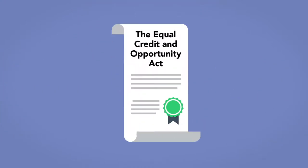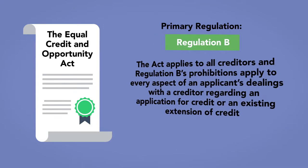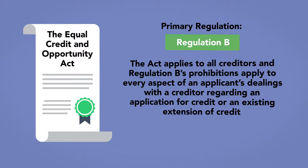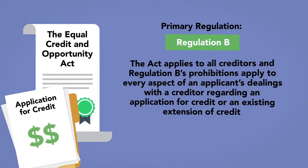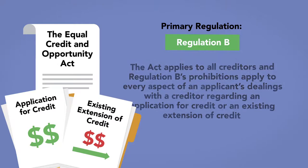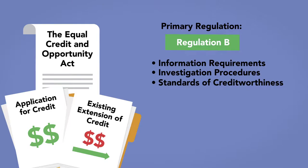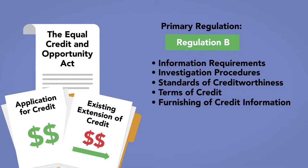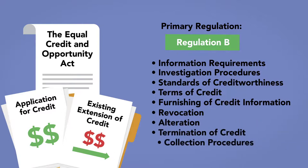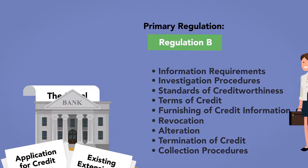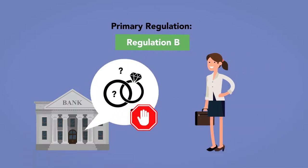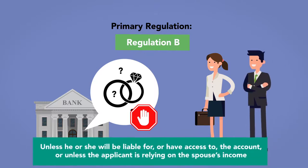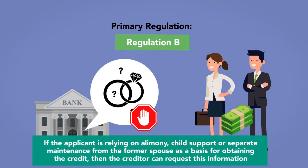The Equal Credit Opportunity Act's primary regulation is known as Regulation B. The Act applies to all creditors, and Regulation B's prohibitions apply to every aspect of an applicant's dealing with a creditor regarding an application for credit or an existing extension of credit. This includes information requirements, investigation procedures, standards of creditworthiness, terms of credit, furnishing of credit information, revocation, alteration, or termination of credit, and collection procedures. Regulation B prohibits a creditor from requesting information about the applicant's spouse or former spouse, unless the spouse will be liable for or have access to the account, or unless the applicant is relying on the spouse's income. For example, if the applicant is relying on alimony, child support, or separate maintenance from the former spouse as a basis for obtaining credit, then the creditor can request this information.